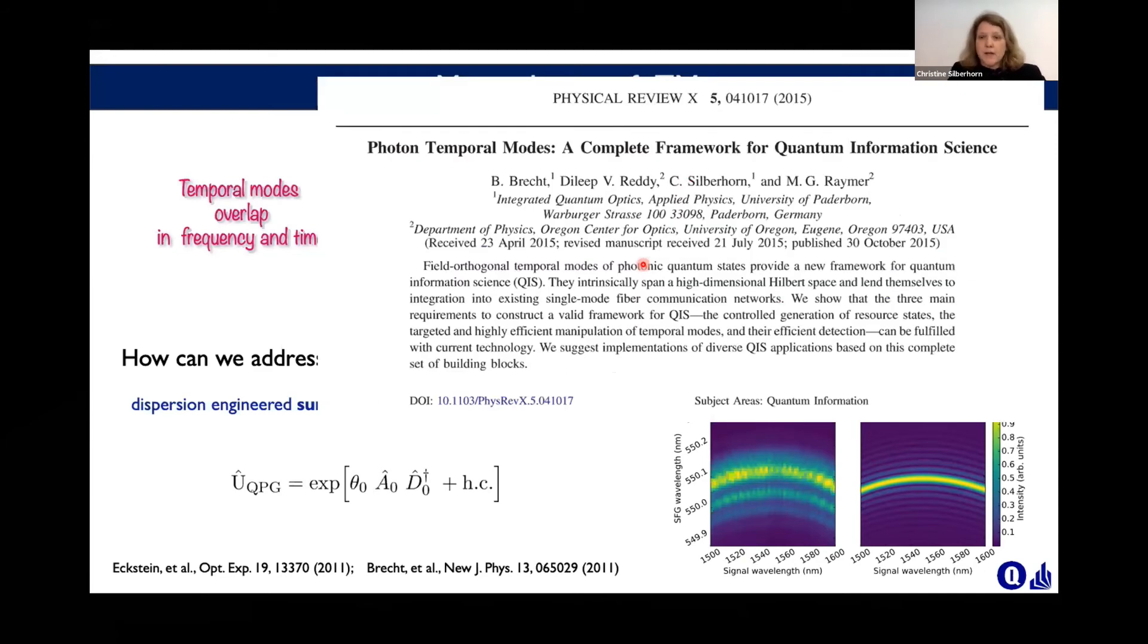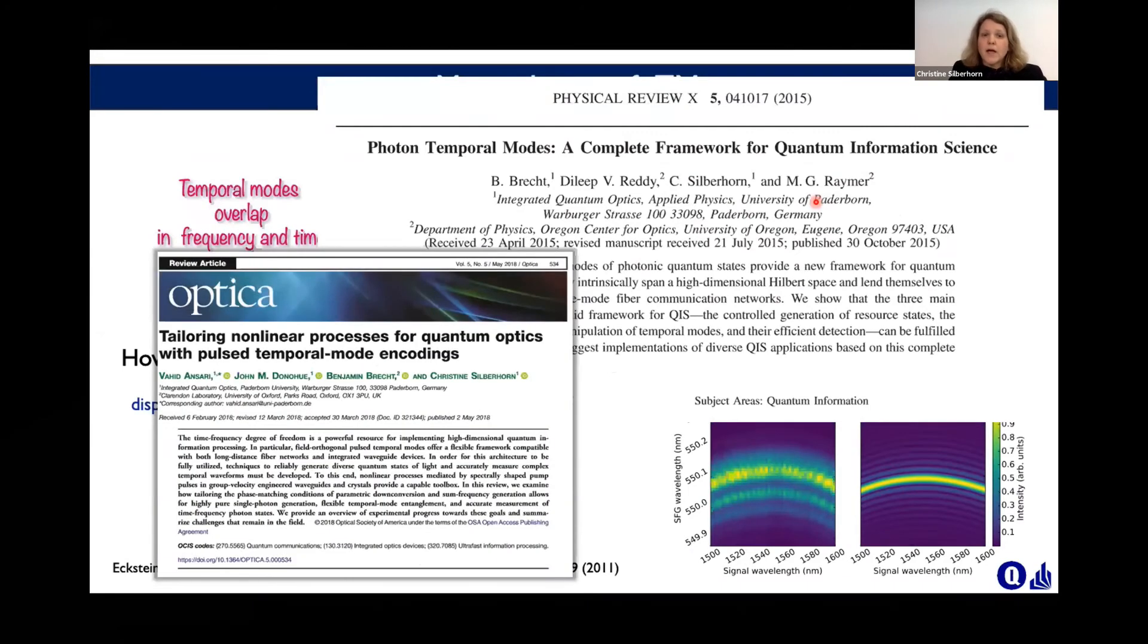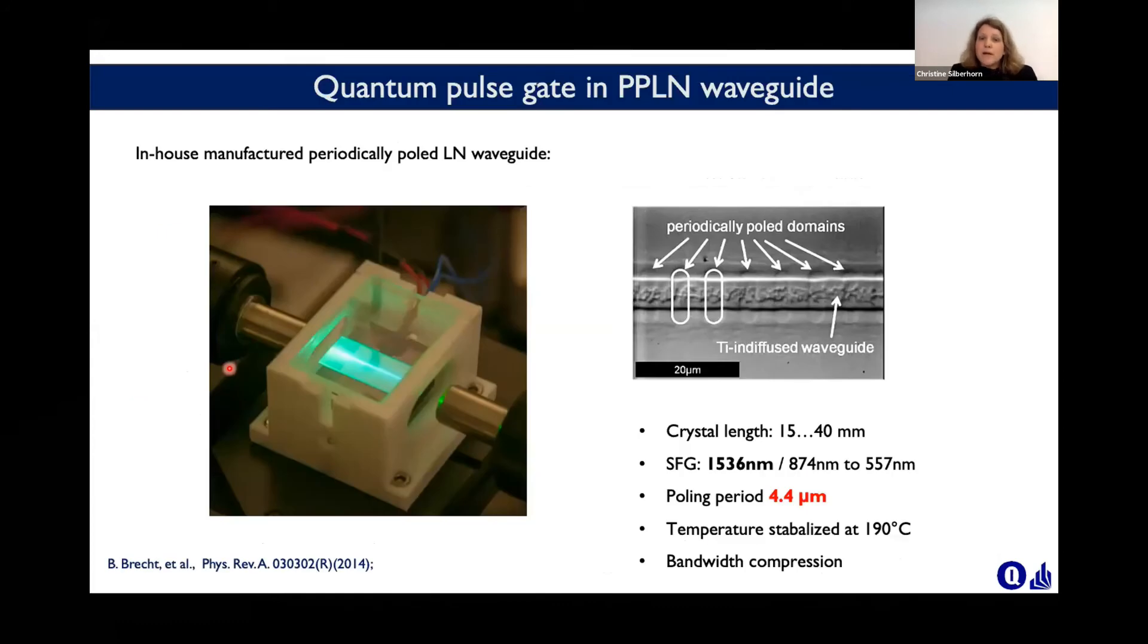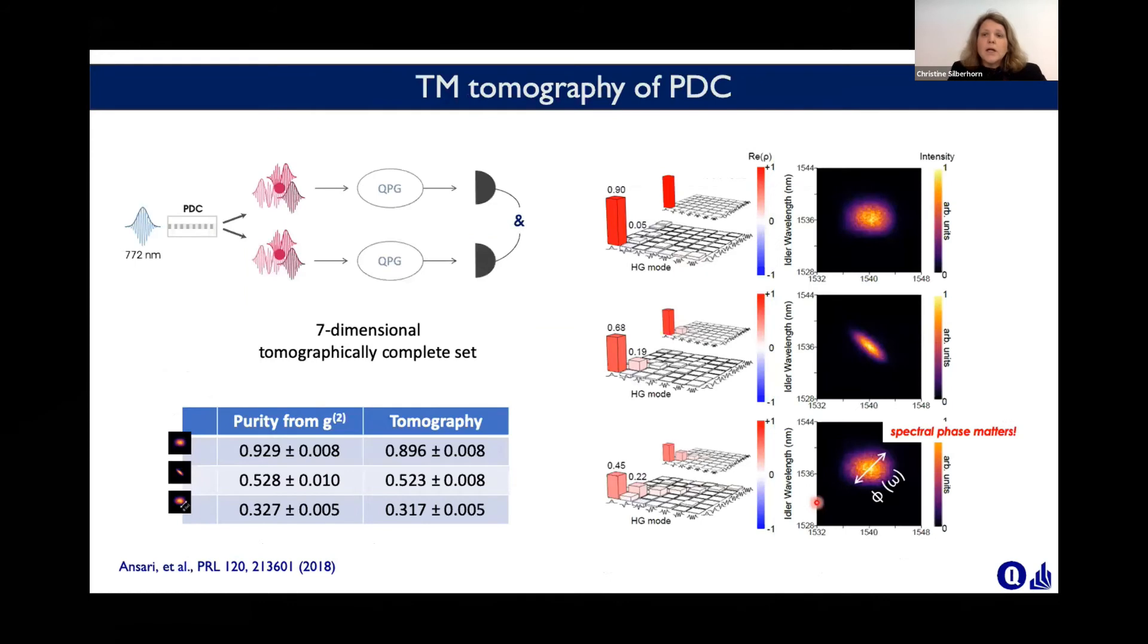Now, how do you use that? I would like to highlight two papers, one which we did together with Mike Raymer, where we already highlighted what we can do and formulate a complete framework for information processing for that. This is a quantum pulse gate we have in Paderborn in our own labs. We are using our own waveguides. This is a periodically poled lithium niobate waveguide, titanium diffused. Here you see some parameters. And here also see why we're interested in these low poling periods, because you really need them to implement these more advanced devices.